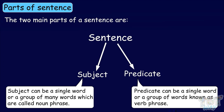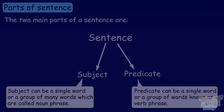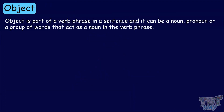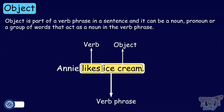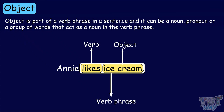Now we are going to learn about objects. Object is part of a verb phrase in a sentence, and it can be a noun, pronoun, or a group of words that act as a noun in the verb phrase. And the action word or the verb in the sentence acts on that object.